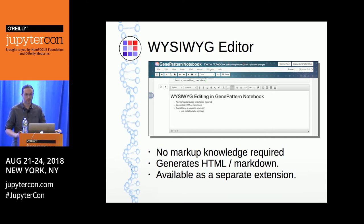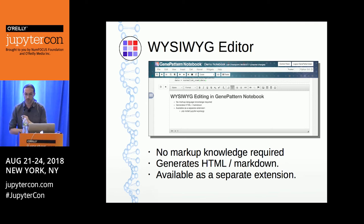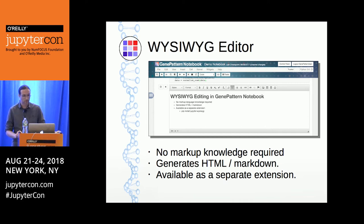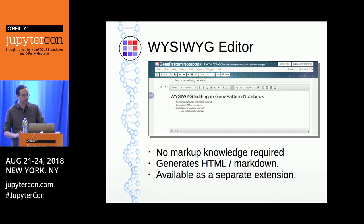Moving on to the next package, and along a similar vein of making things more accessible, we have developed an extension that provides rich text WYSIWYG — what you see is what you get — style editing for markdown cells. This means that if you're working with someone who doesn't know markdown, or if you just want to see a more graphic representation of the cell you're currently editing, you have that option available. It's presented with a familiar word processing style interface. As an open source developer, this has been a milestone for me — it's been picked up by SUSE Linux and made available as part of their Linux distribution through the YAST package manager.